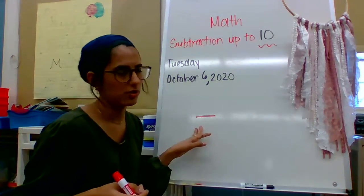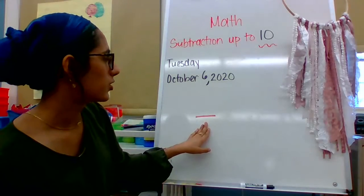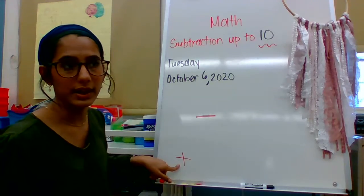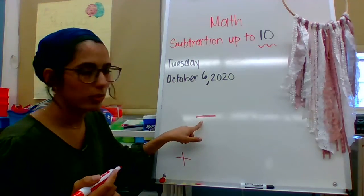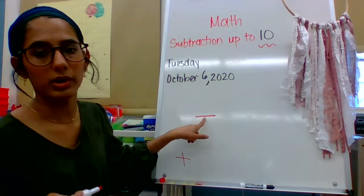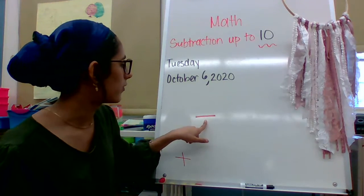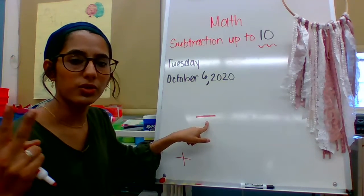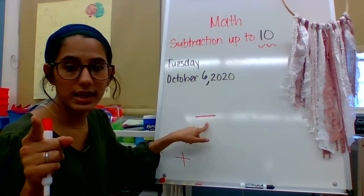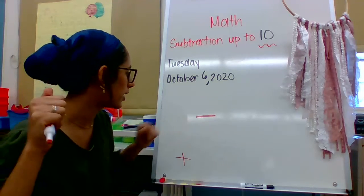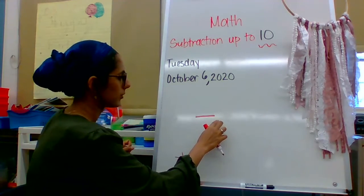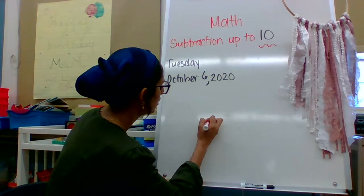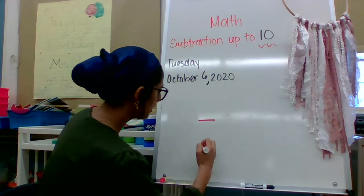What does this mean? Do you remember what this means? Last week I said this addition symbol or the plus sign means I put it together. What does this mean? What do I have to do to the numbers? Call it out, and I'll give you the answer in 3, 2, 1. If you said take away, you are correct. So here is my minus sign, and that means I take away.